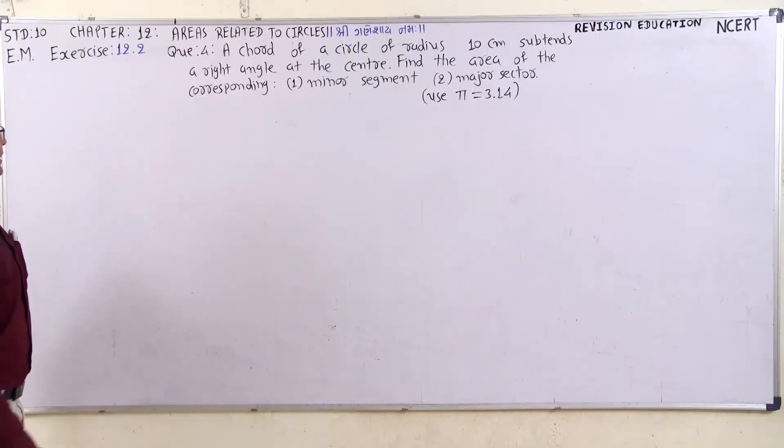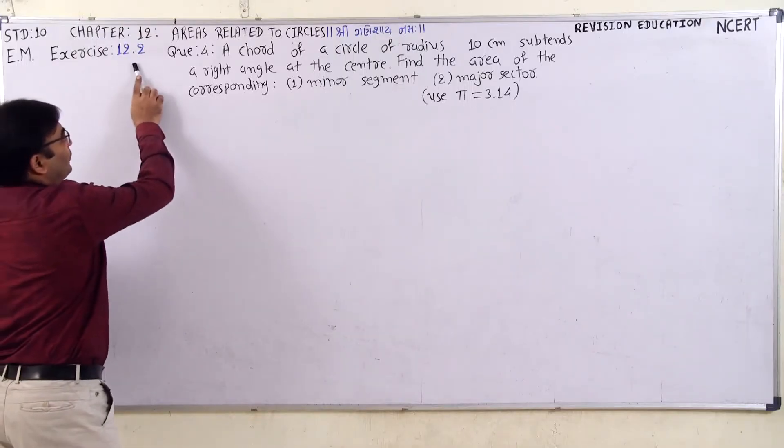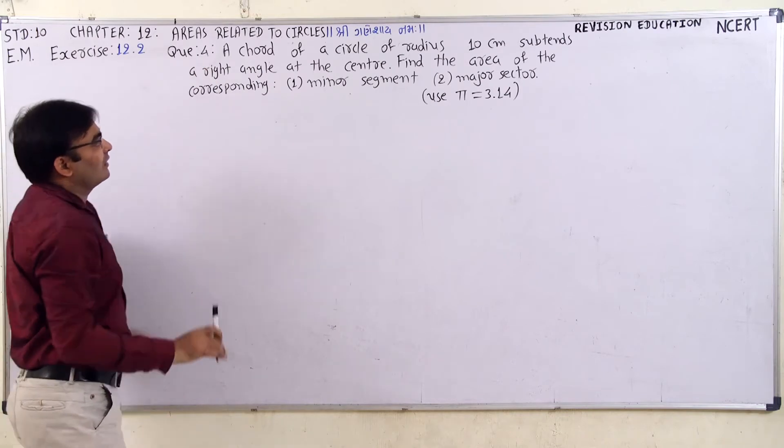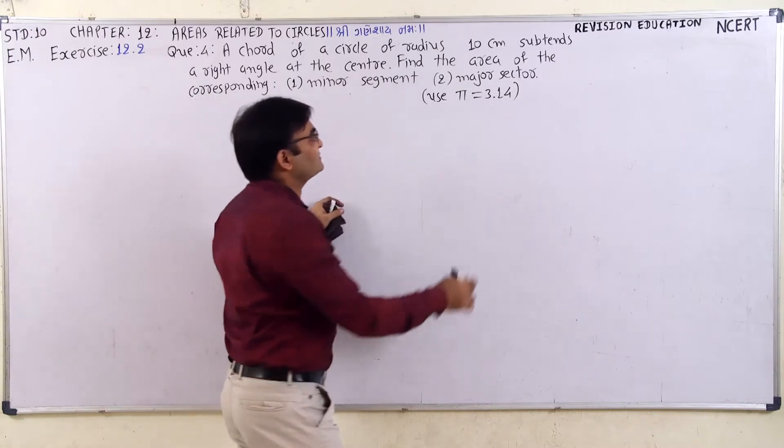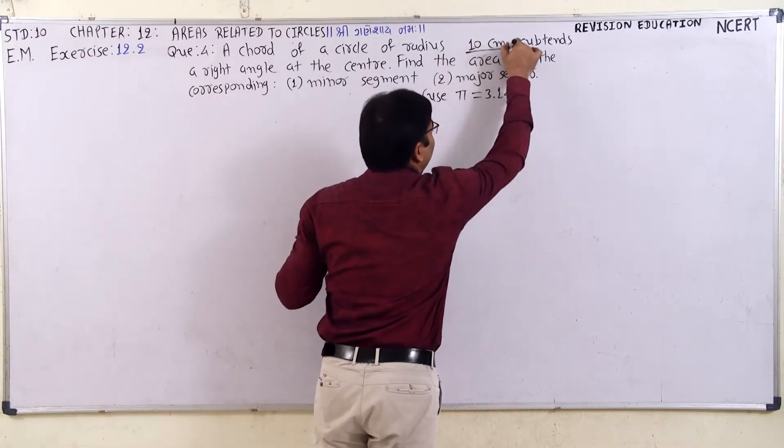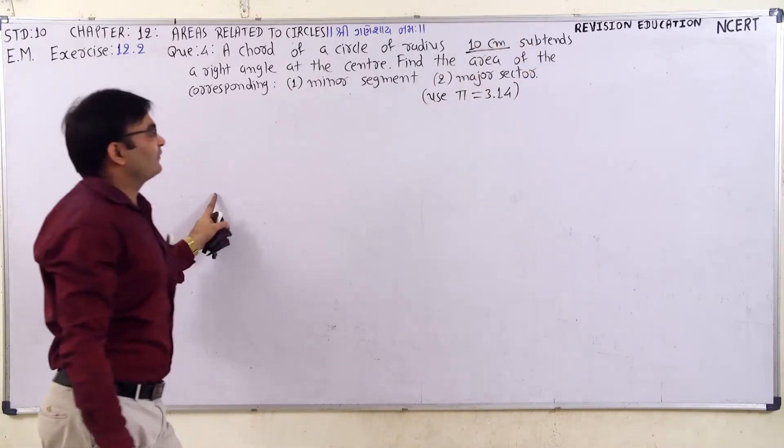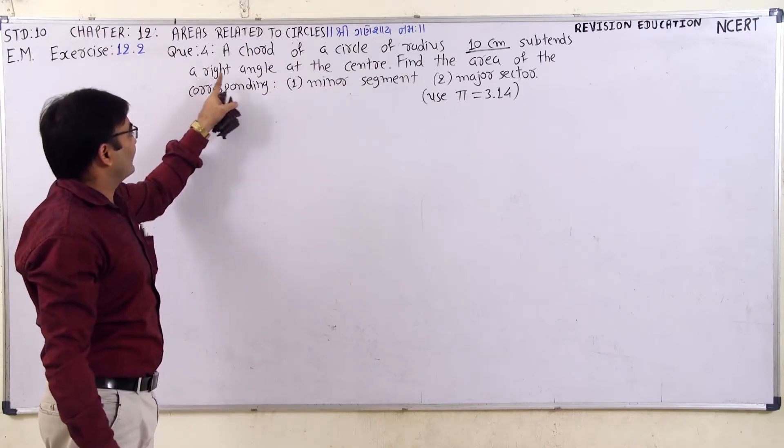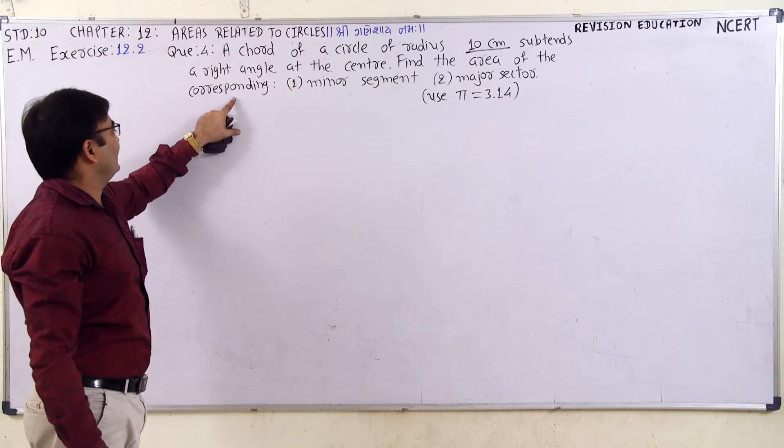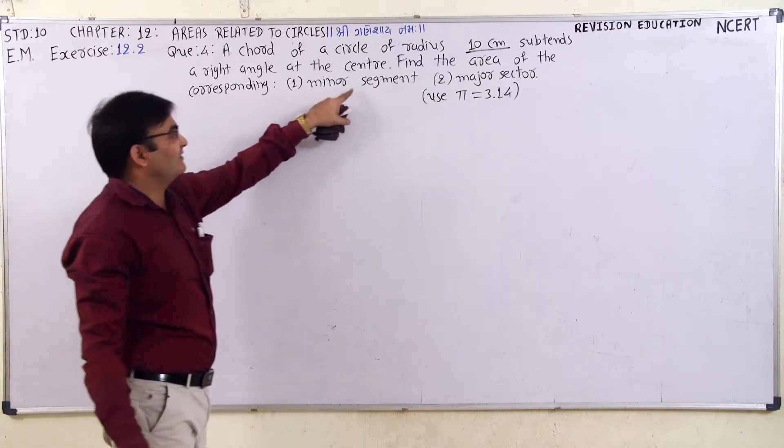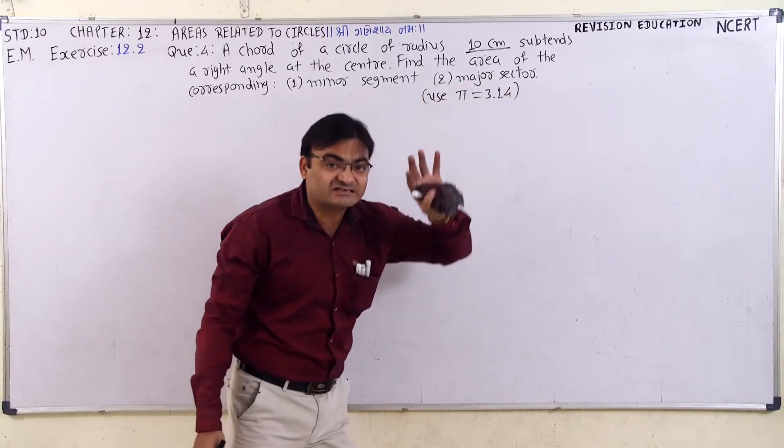Now friends, the exercise we are going to do is: A chord of a circle of radius 10 cm subtends a right angle at the center. Find the area of the corresponding minor segment and major sector.